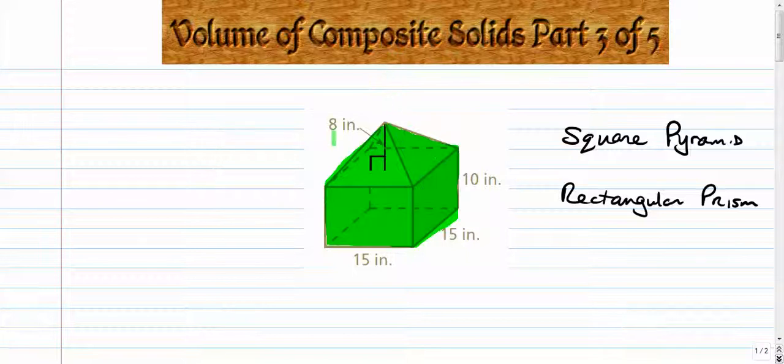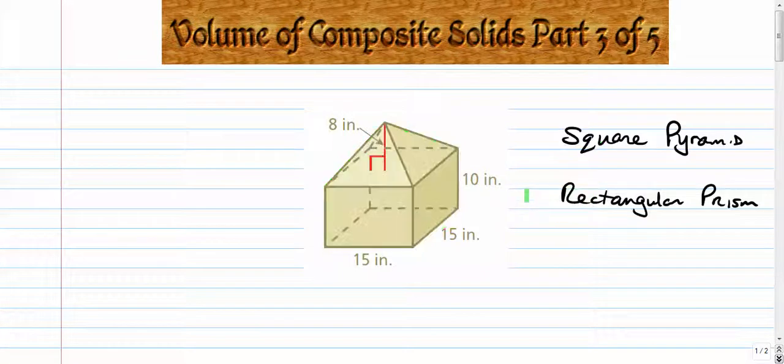And to do that, of course, we're just going to look at volume of the pyramid plus volume of the prism. We're just going to find the two sub-volumes and add them together. That is our strategy.